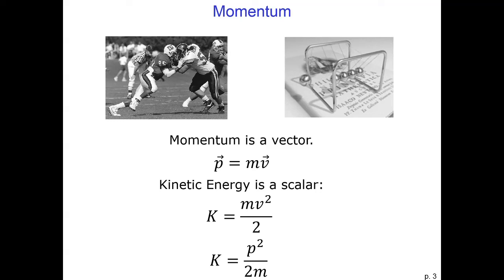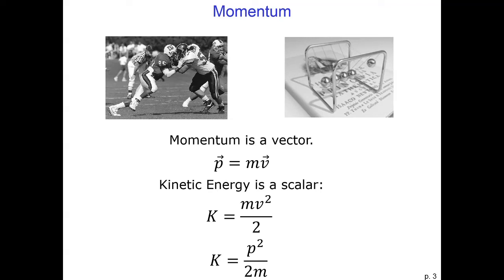If we want to find the kinetic energy of an object, we can use our old equation: one-half the mass times the velocity squared. But sometimes it will be easier to find the momentum of an object than its velocity. In this case, we can use the formula: kinetic energy equals p squared divided by two divided by the mass. This is really the same formula — writing velocity as p over m and substituting into the kinetic energy equation gives us one-half times mass times p squared over m squared, which simplifies to p squared over two times mass.